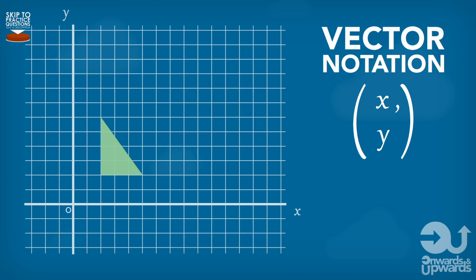That means that the top number tells us how far left or right the shape moves. Now remember, if we have a positive value, that means the shape moves to the right. And if we have a negative value, that means the shape moves to the left.